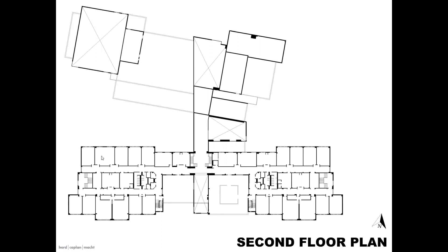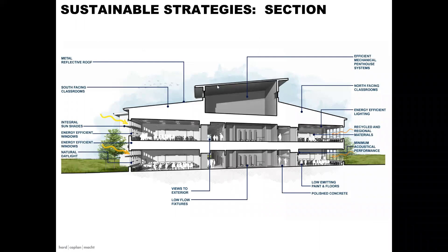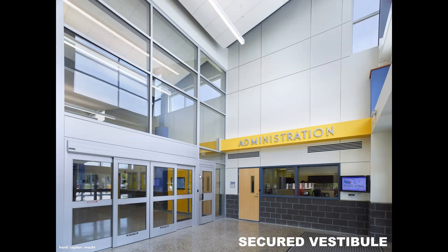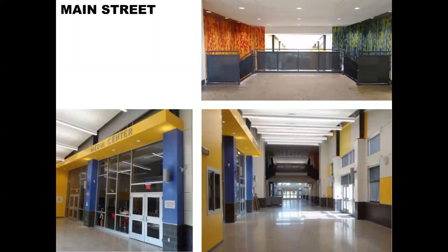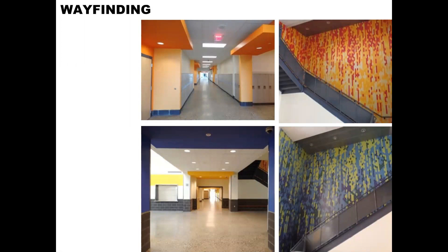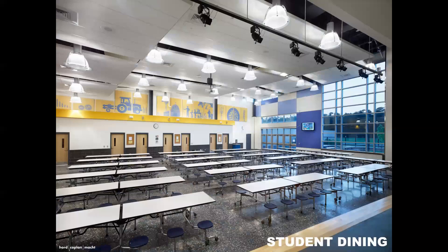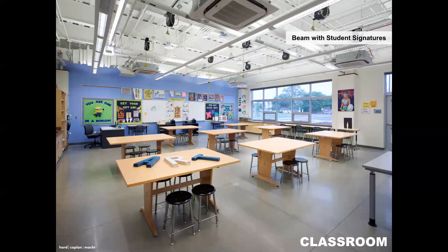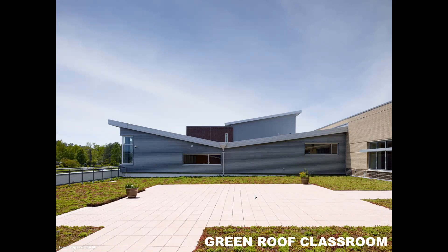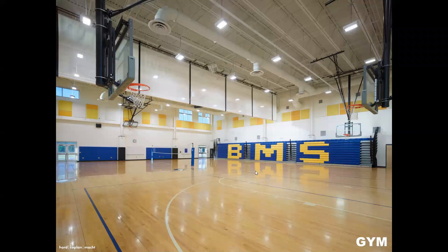The floor plan shows individual bathroom support spaces in the middle with the main street connecting two bars — the media center, gym, and cafeteria. The second floor is basically just the front bar, which is two stories and steps down for the two outdoor classrooms. In section you can see sustainable strategies including the entry vestibule, a bridge connector, and the wing color coding — sixth, seventh, eighth grade and special — connected through main street using tile. Interior spaces include the media center, student dining, art classroom, and one green roof classroom used for gathering and another for science lab exploration.